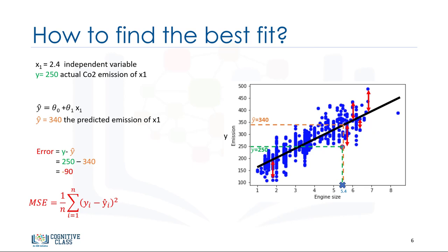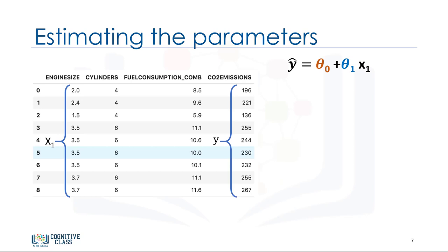Option one, we can use a mathematic approach. Or, option two, we can use an optimization approach. Let's see how we can easily use a mathematic formula to find the theta0 and theta1. As mentioned before, theta0 and theta1 in the simple linear regression are the coefficients of the fit line. We can use a simple equation to estimate these coefficients. That is, given that it's a simple linear regression with only two parameters, and knowing that theta0 and theta1 are the intercept and slope of the line, we can estimate them directly from our data. It requires that we calculate the mean of the independent and dependent, or target columns, from the dataset. Notice that all of the data must be available to traverse and calculate the parameters.